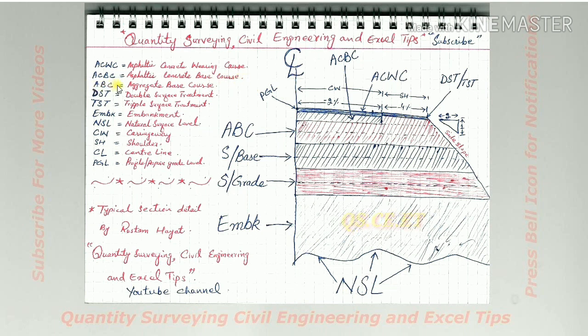DST—double surface treatment, TST—triple surface treatment, EMBK—embankment, NSL—natural surface level, CWC—carriageway, SH—shoulders, CL—centerline, PGL—profile or proposed grade level. So this is a short introduction video of typical cross-section of road.